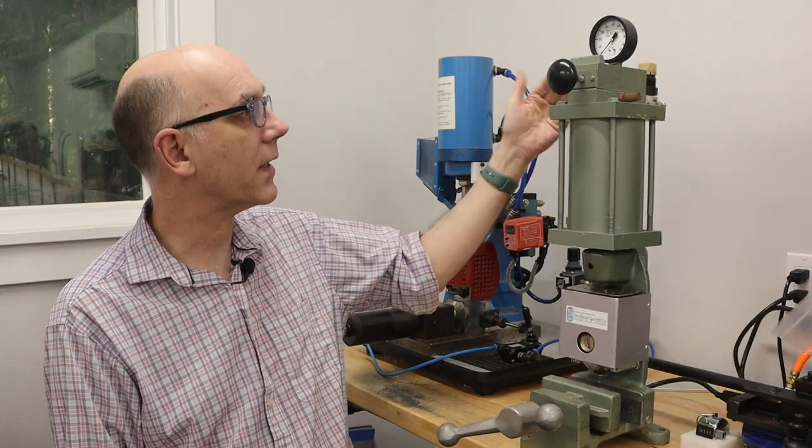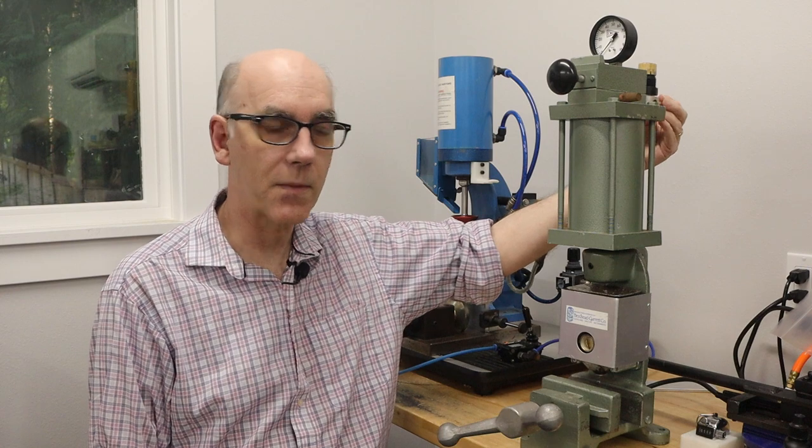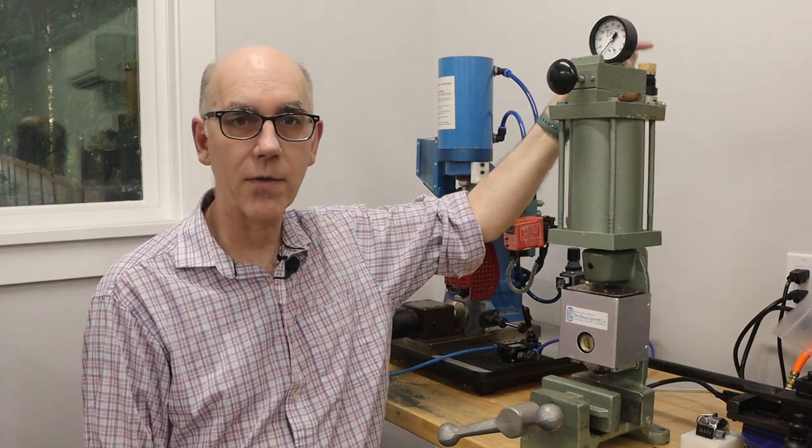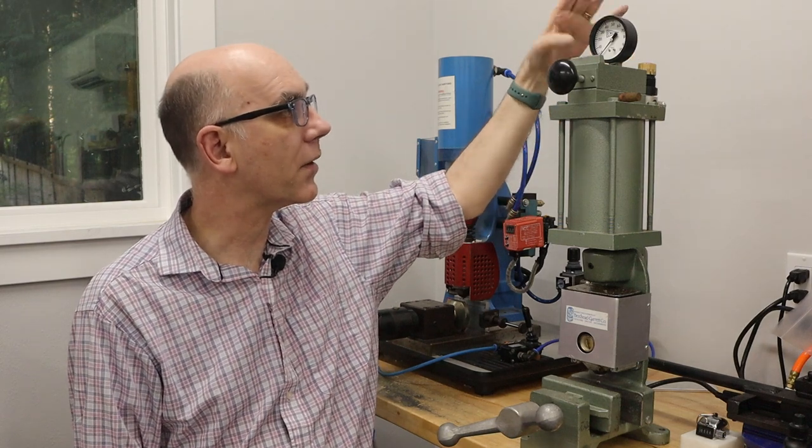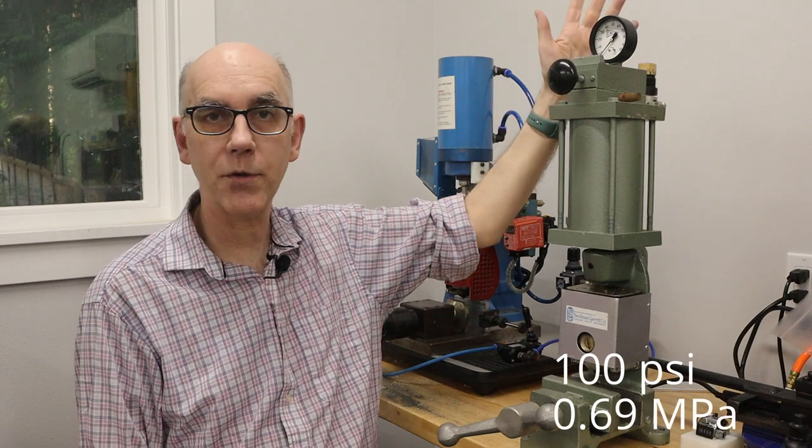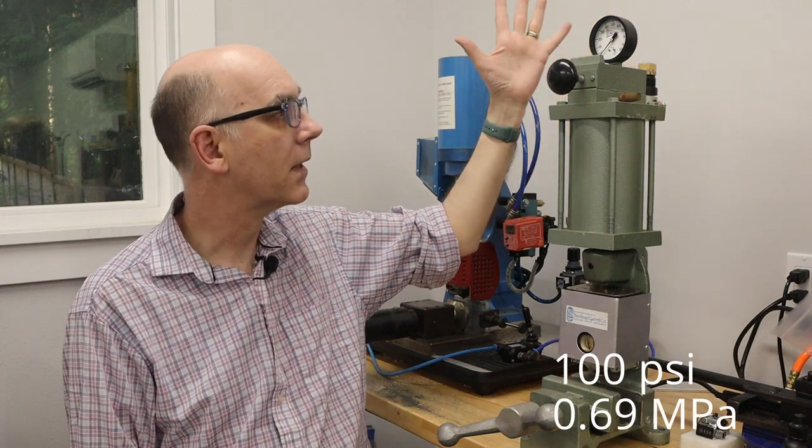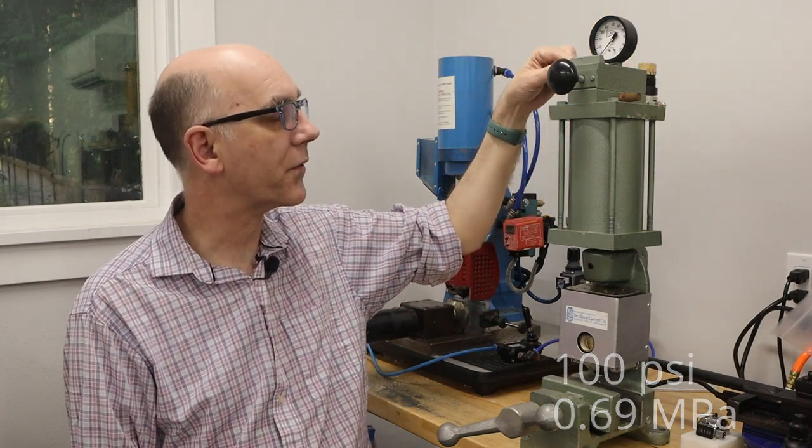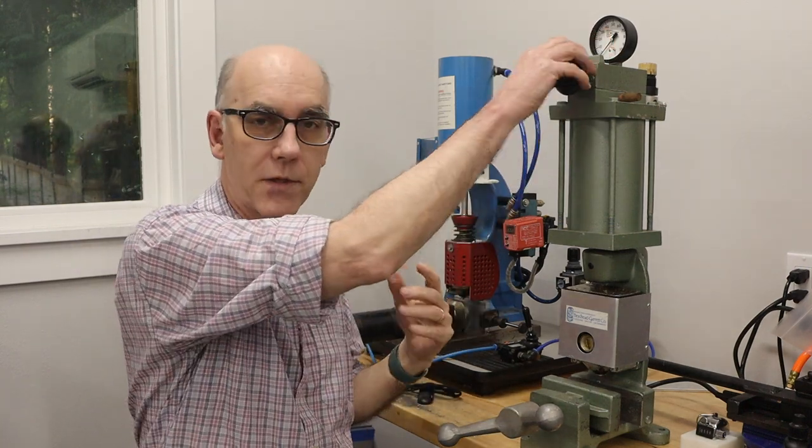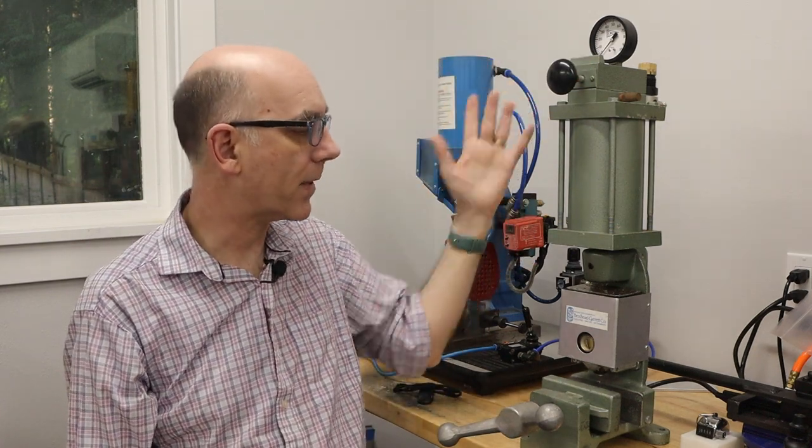The way this works is the air supply comes into the back. I don't have it connected at the moment. There's a regulator on the top, and then there's a pressure gauge here. This goes up to 100 psi. The pressure then goes through this manifold. There's a valve here. You push this in to inject, and you pull it out to release the pressure, and then it will come back up.